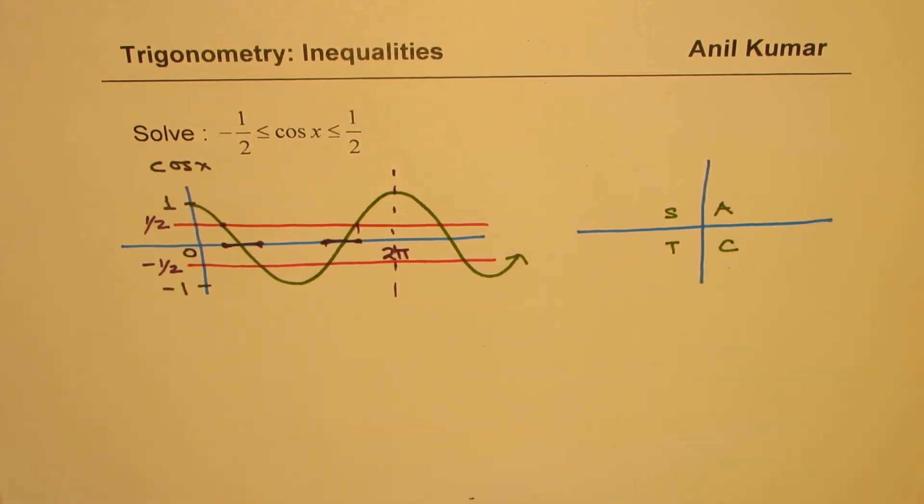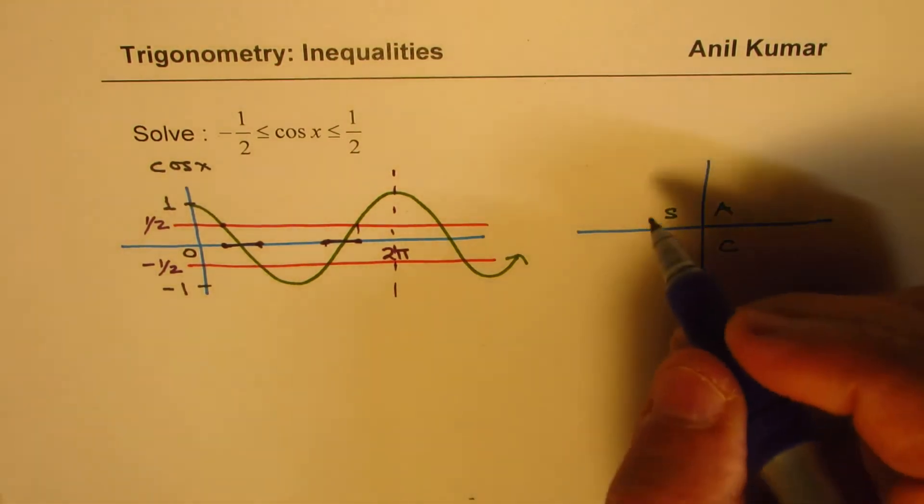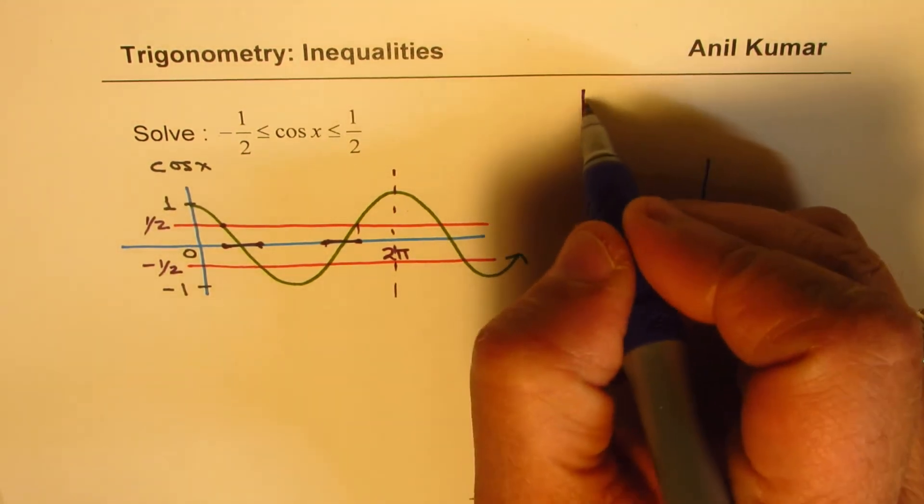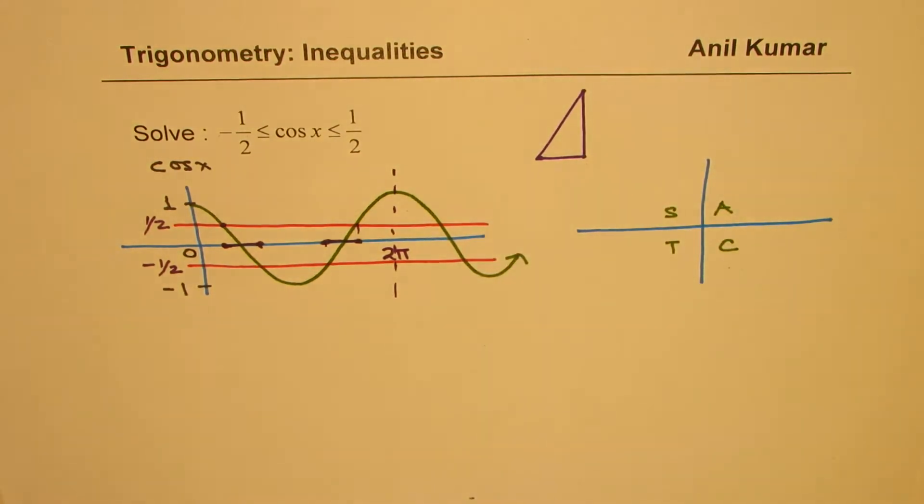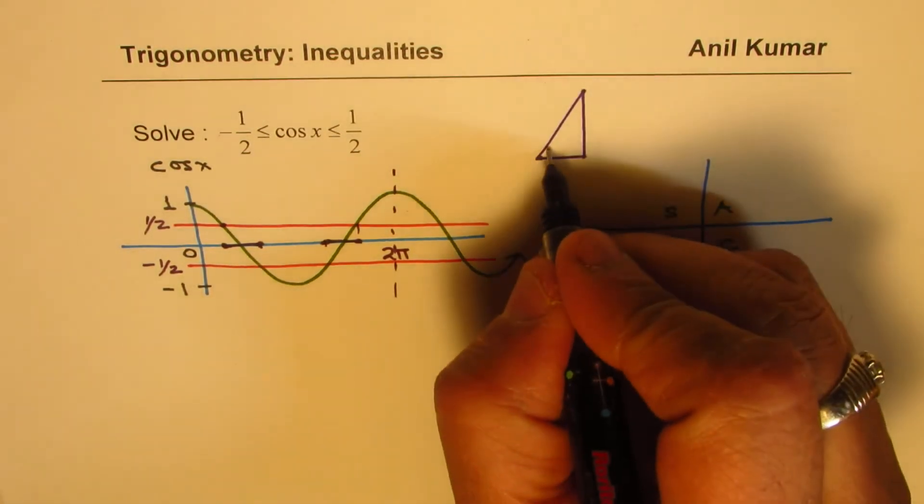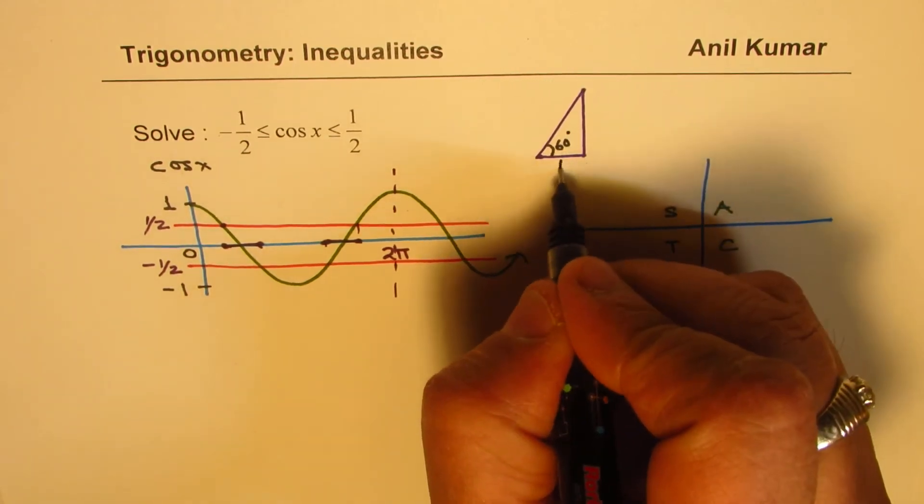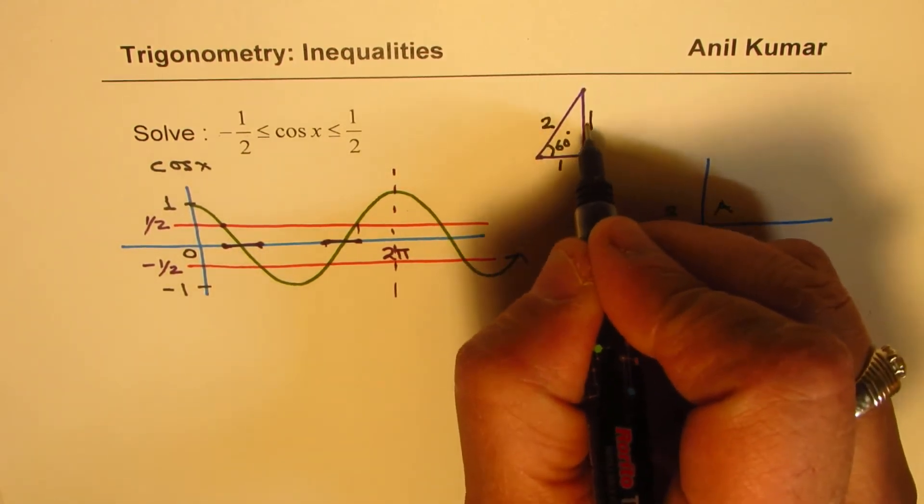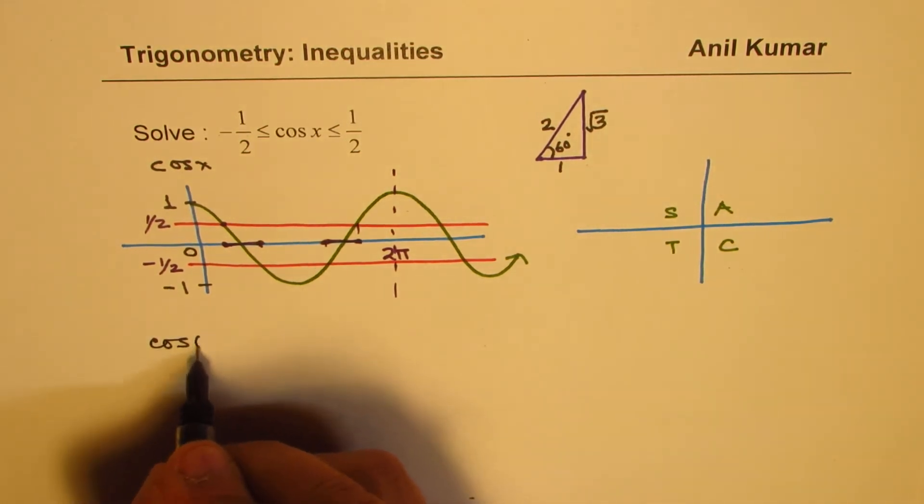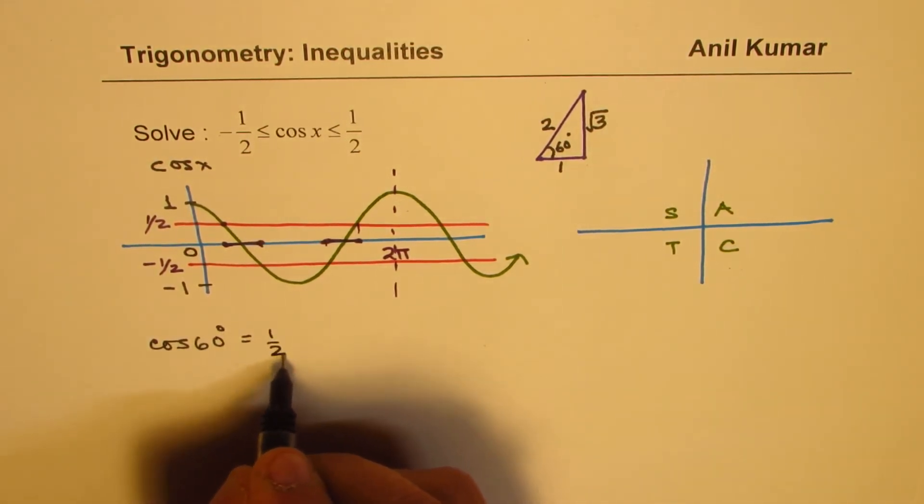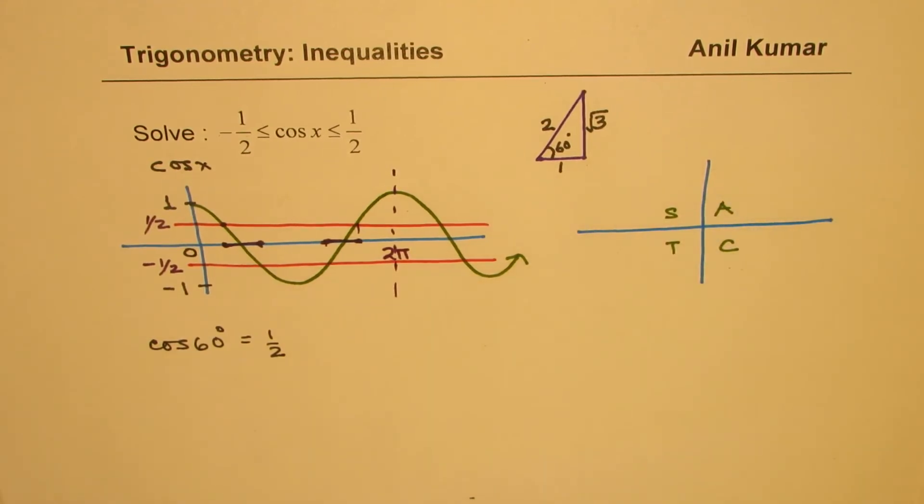As far as the value of half is concerned, what we know is that cos of 60° is half. Let me draw a special triangle here to explain what I am trying to say. So if I have a right triangle where this angle is 60 degrees, in that case cos value is half. So what we know here is that cos of 60 degrees is actually equal to half. So that is the acute angle.